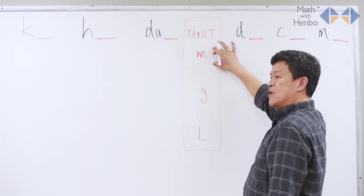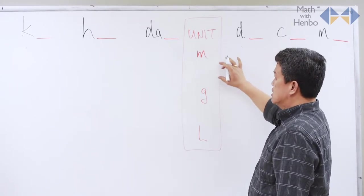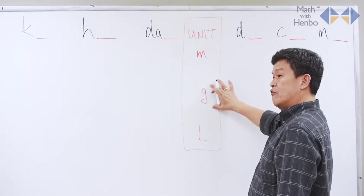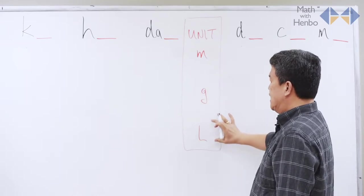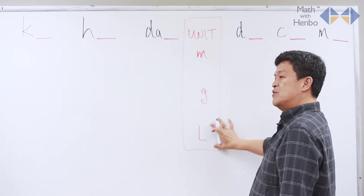M stands for meter, which measures the length of things, distance. G is for grams, measuring weight, and L is for liter, which measures volume.